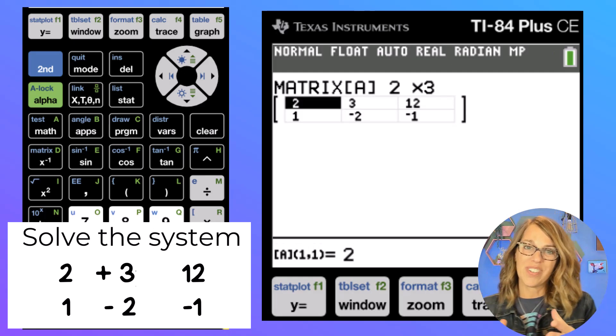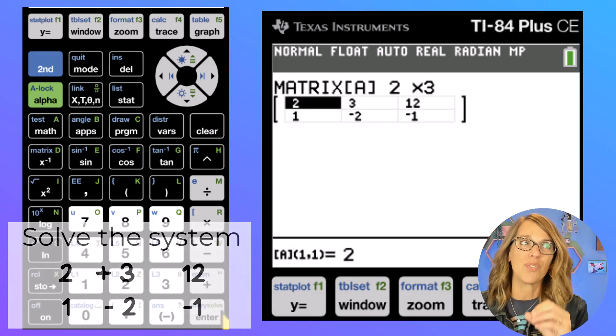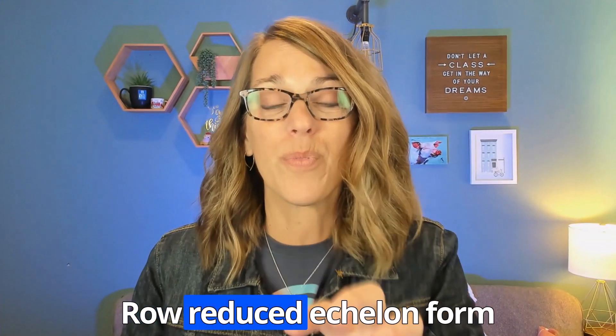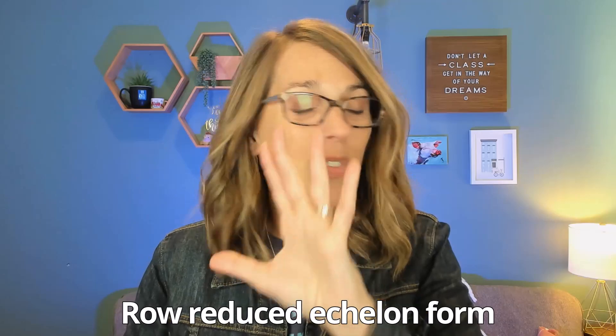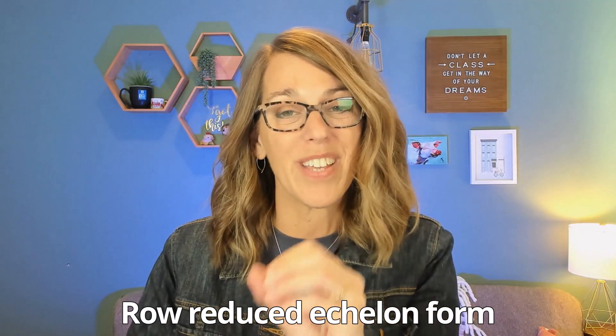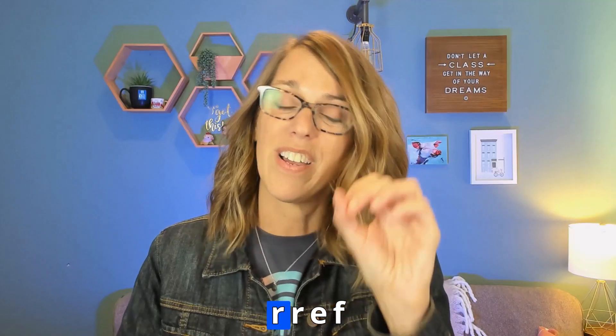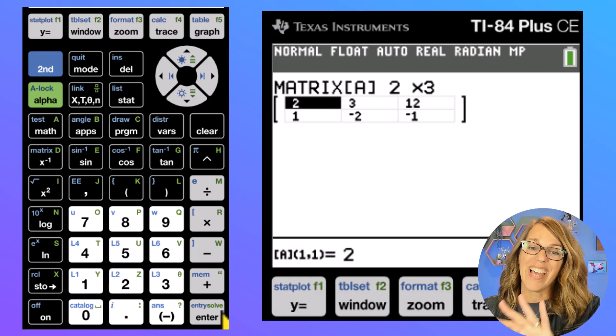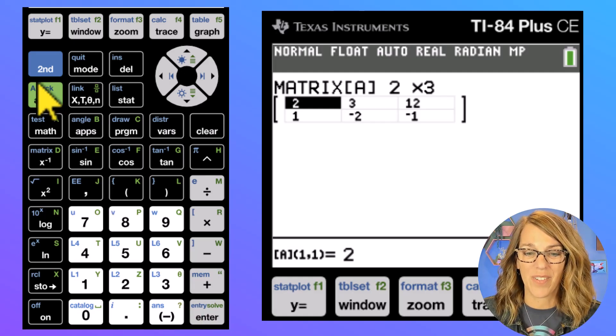What we want to do is to ask the calculator to do, oh my gosh, row reduced echelon form. You do not need to know what that means. You just need to remember that you're looking for R, R, E, F. It's worth it. Okay, so let's quit here. So I'm going to go second followed by quit.